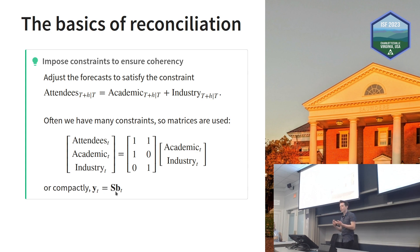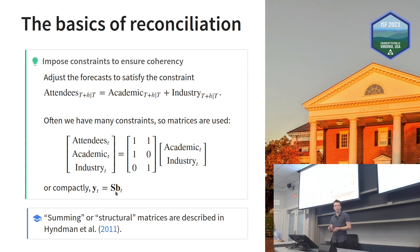We want to impose this constraint and ensure the data and forecasts are coherent. We require that total attendees equals the sum of academic and industry attendees. We often represent that with a matrix because we have lots of constraints in large hierarchies. Compactly, you represent this with Yt is the summation matrix S times the bottom level series. If you can compute the bottom level and sum it, you're guaranteed coherence.